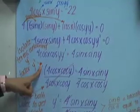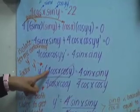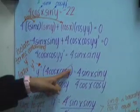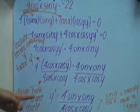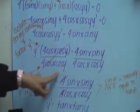Factor y prime: y prime times 4cosxcosy equals 4sinxsiny. Divide both sides by 4cosxcosy to get y prime itself.